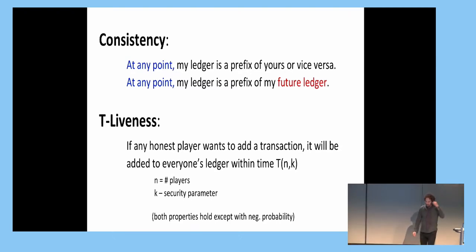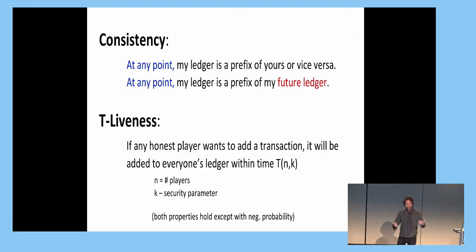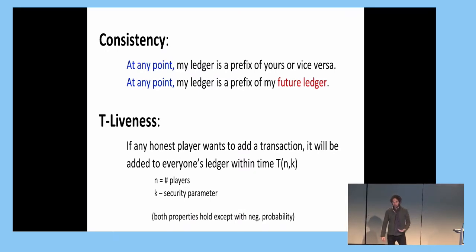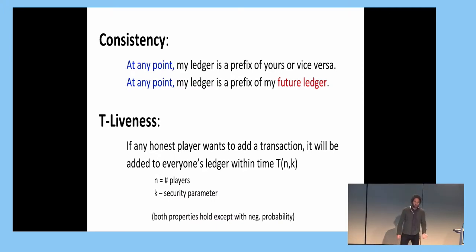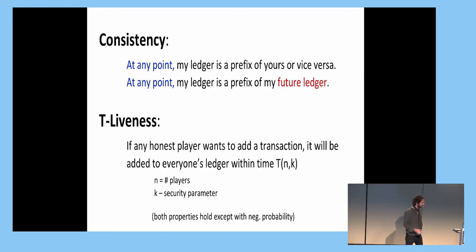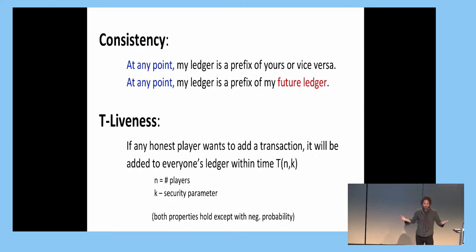Liveness is parameterized by a function T, which determines how fast a transaction is guaranteed to be introduced into a ledger. Whenever an honest node would like to add a transaction, if we satisfy T-liveness, that means everybody should have this transaction inside their ledger within T(N, K) steps, where N is the number of players and K is some security parameter. Both these properties need to hold with all but negligible probability.